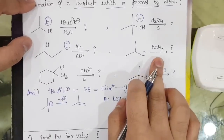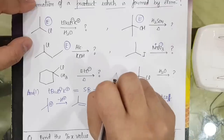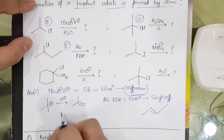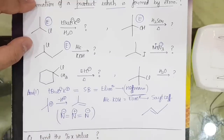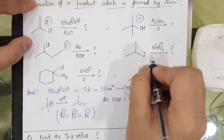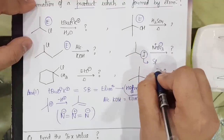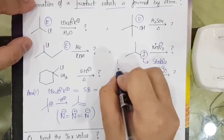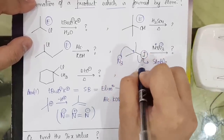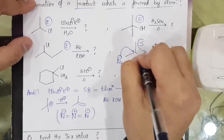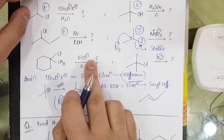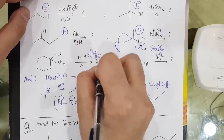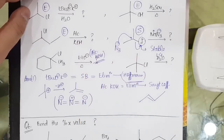NaN3: N3 minus is the azide ion (N=N+=N−), where the terminal nitrogen has a negative charge acting as a nucleophile. Since iodide is a very stable leaving group, N3 minus easily goes and takes out I minus — substitution reaction occurs. In the next case, EtO minus (alcoholic KOH/Williamson-type base) does Zaitsev elimination, giving the elimination product.